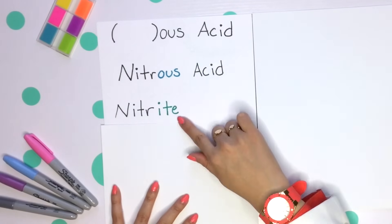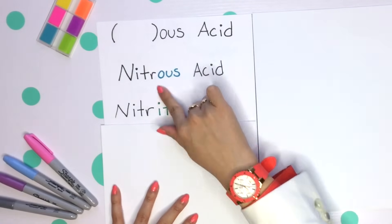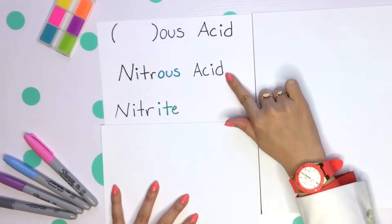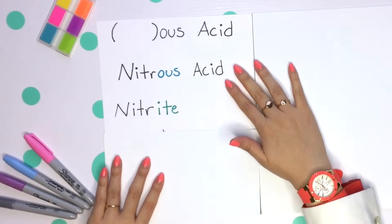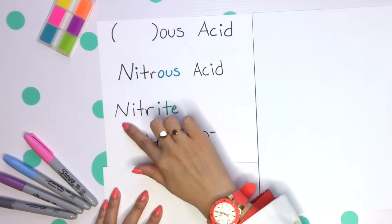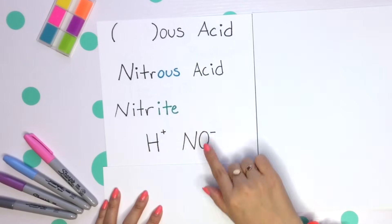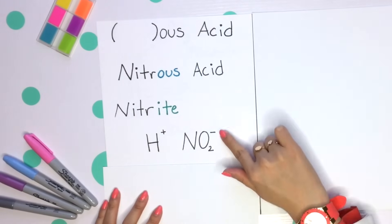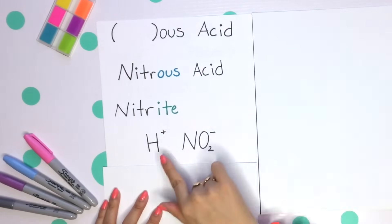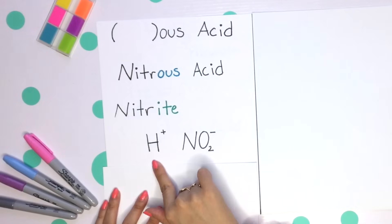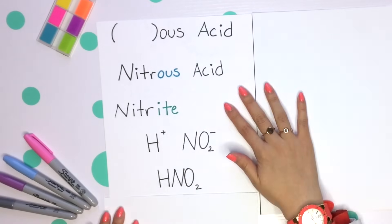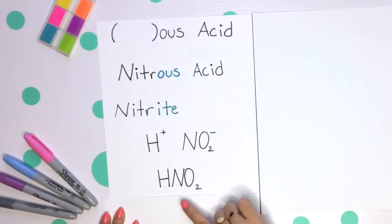We have nitrite. Whenever we're given -us, it means -ite. The acid refers to a hydrogen being in front. We'll have nitrite, which is NO2 with a minus charge, and placing that hydrogen in front and balancing charges, we get HNO2.